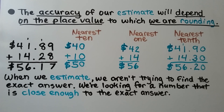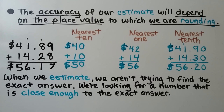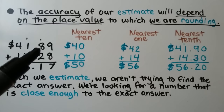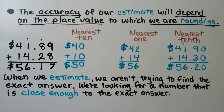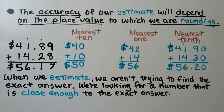The accuracy of our estimate will depend on the place value to which we are rounding — the lesser the place value, the closer the estimate. Here we have $41.89 adding $14.28. Rounding to the nearest $10: the 1 tells the 4 to stay the same, giving $40; and the 4 tells the 1 to stay the same, giving $10. We add them and get $50. Rounding to the nearest dollar: the 8 tells the 1 to go up to 2, rounding to $42; and the 2 tells the 4 to stay the same, rounding to $14. We add them and get $56.